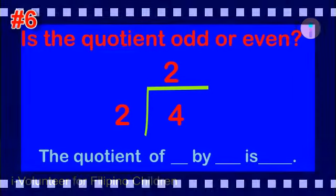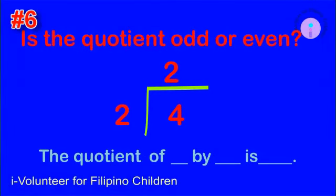Kindly repeat. Item number six: is the quotient odd or even? The quotient of four by two is even.